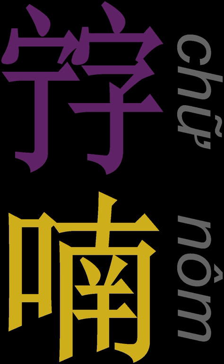Chữ Nôm is the logographic writing system of the Vietnamese language. It is based on the Chinese writing system but adds a high number of new characters to make it fit the Vietnamese language. In Vietnamese, Chinese characters are called Chữ Hán, Hán Tự, Hán Văn characters, or Chữ Nho, Confucian characters. Hán Văn also means Chinese-language literature. The term Hán Nôm in Vietnamese designates the whole body of Vietnamese pre-modern written materials, either written in Chinese or in Vietnamese.